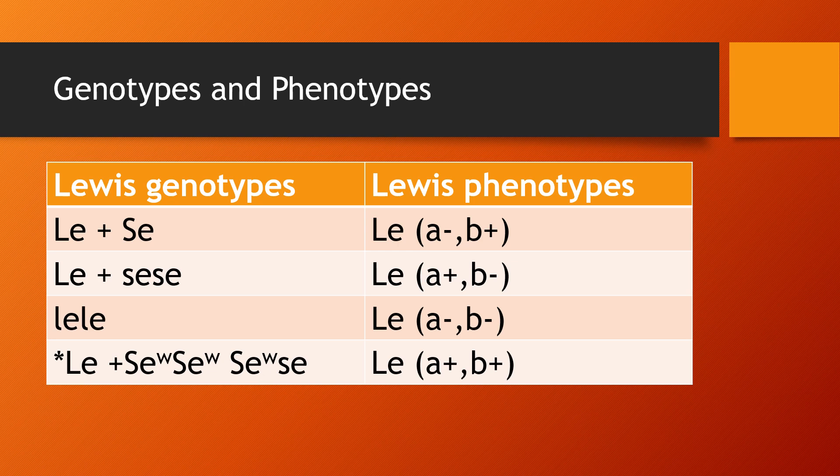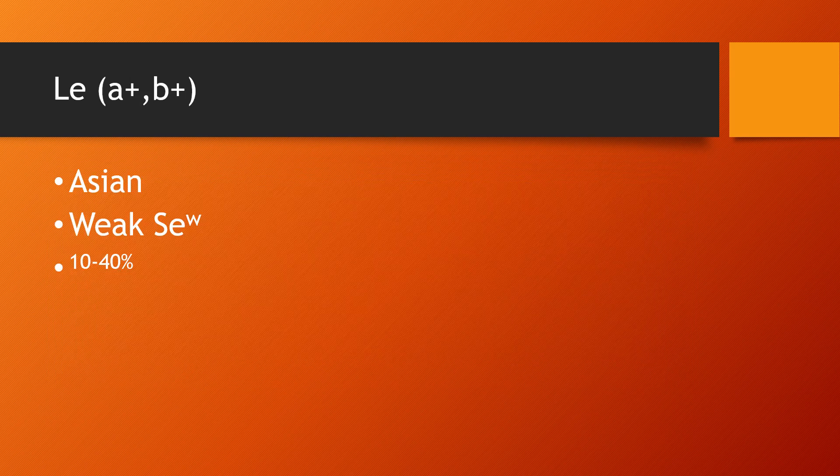This last line hasn't been talked about and isn't included in the flowchart. It would be important to include in the Asian population, as this can be 10 to 40 percent of the population. The secretor gene in this case is weak, which leads to both antigens being detected on the red blood cells. When you see capital SE and capital LE genes, select Lewis A negative B positive as the phenotype on an exam, unless they tell you the person is Asian and carries a weak capital SE gene.